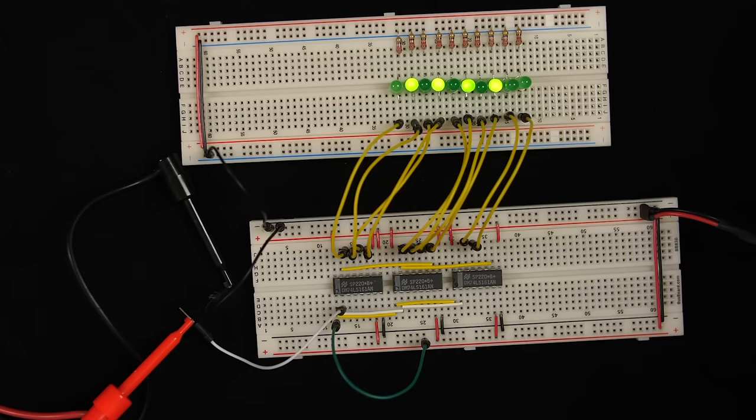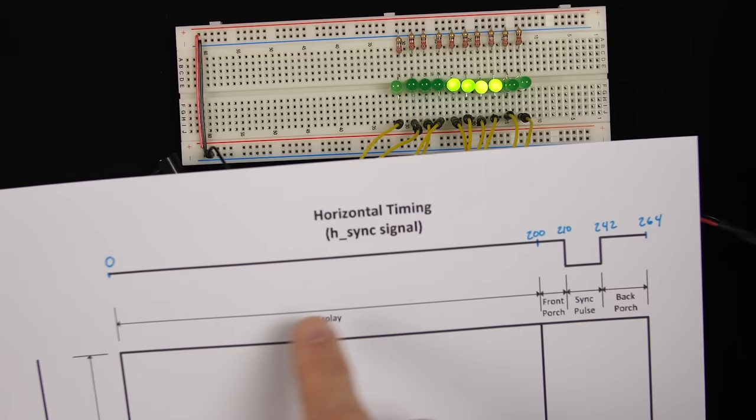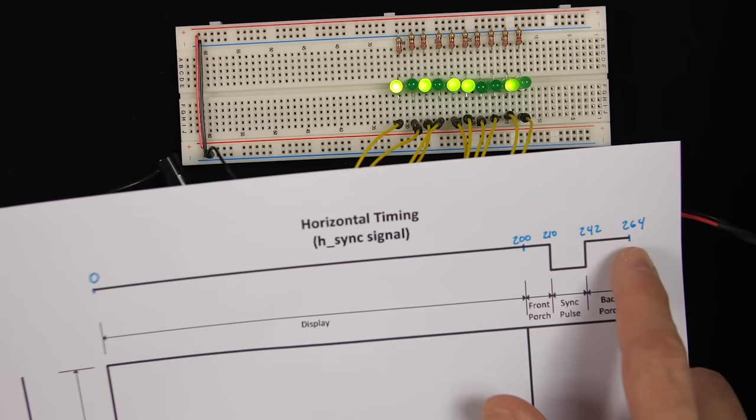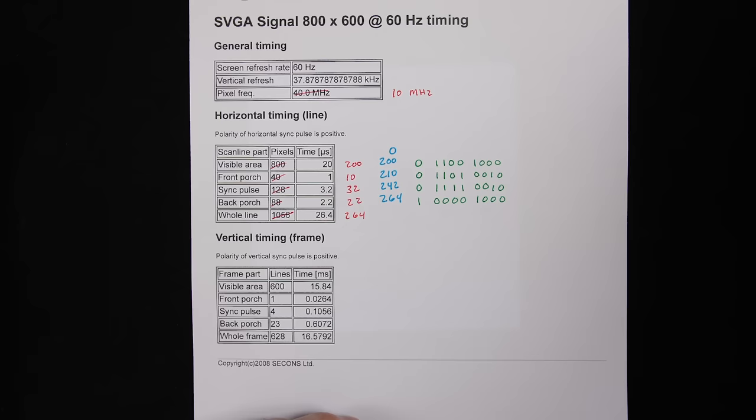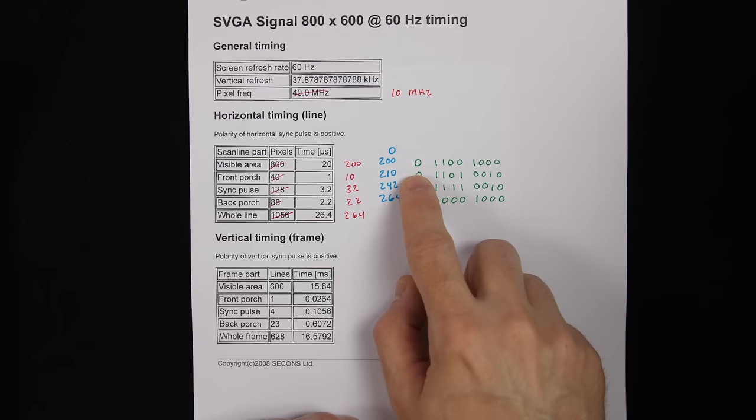What we really want is to know when we get to each specific time point. We want to start counting at zero, then know when we get to 200, when we get to 210, when we get to 242, and when we get to 264. At 264 we want to reset back to zero. So how can we tell? To figure out when the counter gets to 200, we look at the binary equivalent: the 128-place, 64-place, and 8-place bits are set — that makes 200, and all the rest are zeros.